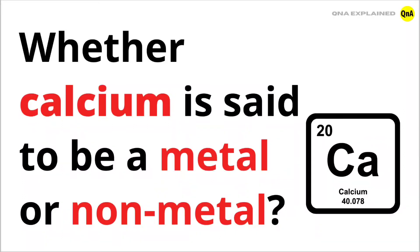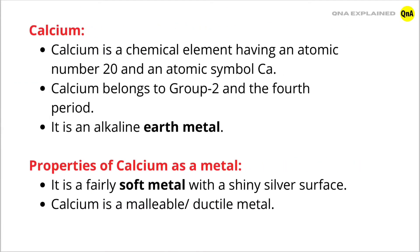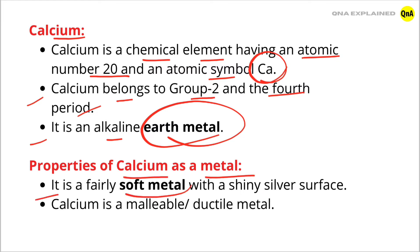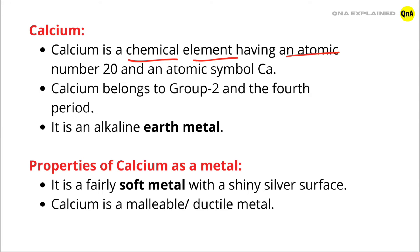Whether calcium is a metal or non-metal, let's see. Calcium is a chemical element having an atomic number 20 and an atomic symbol Ca. Calcium belongs to Group-2 and the fourth period. It is an alkaline earth metal. Properties of calcium as a metal: it is a fairly soft metal with a shiny silver surface. Calcium is a malleable, ductile metal.